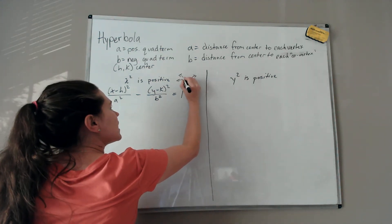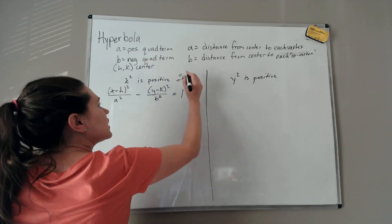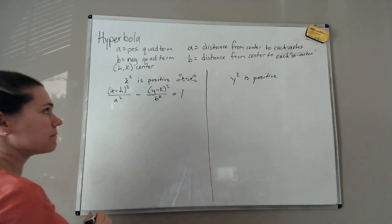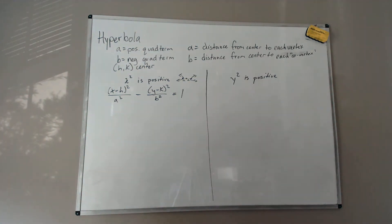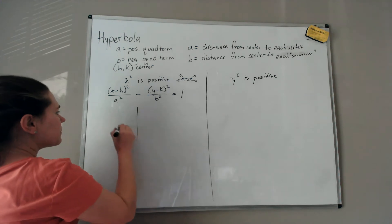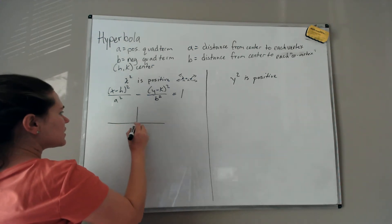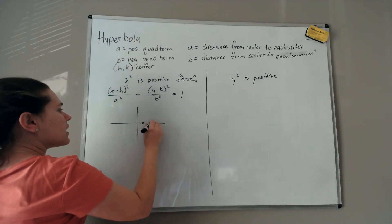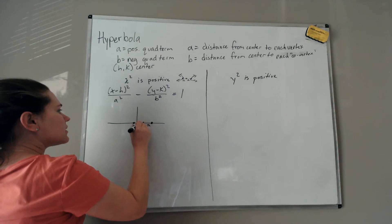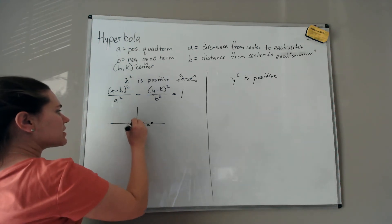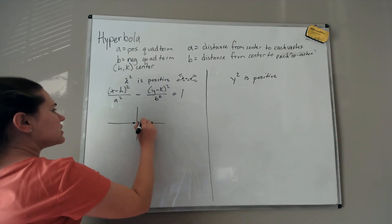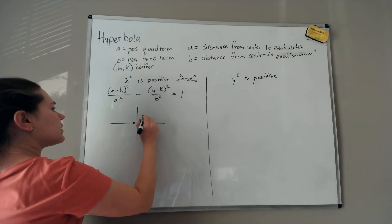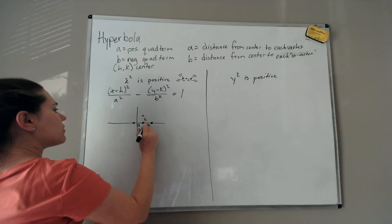The vertices are to the left and right of the center, each at a distance of a. The co-vertices are above and below the center, each at a distance of b. So if the center is here, you move right a and left a for your vertices, and up b and down b for your co-vertices.